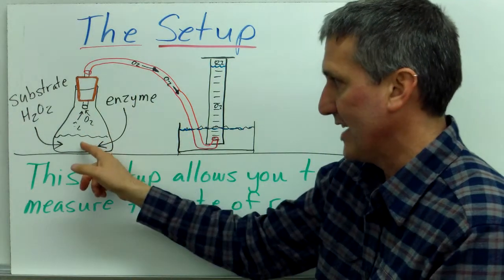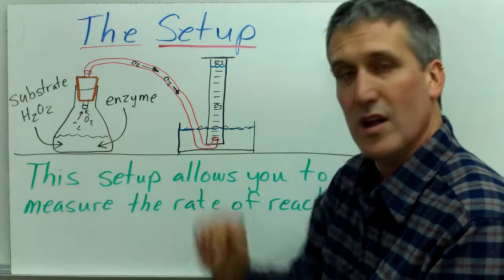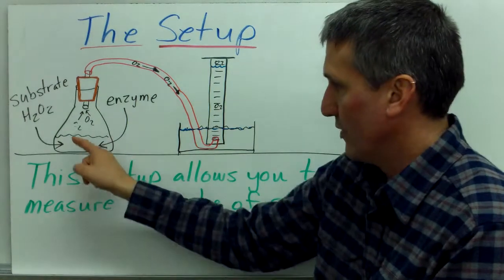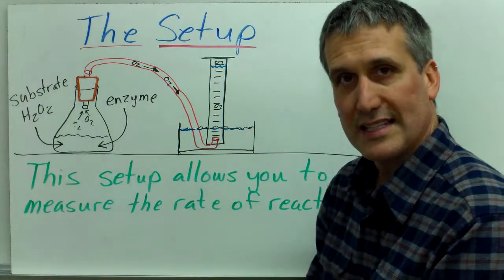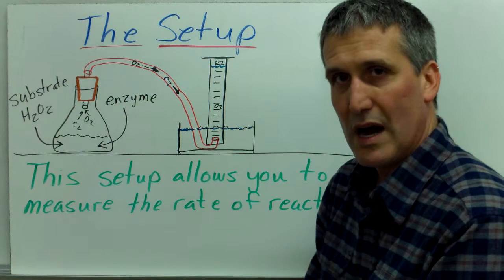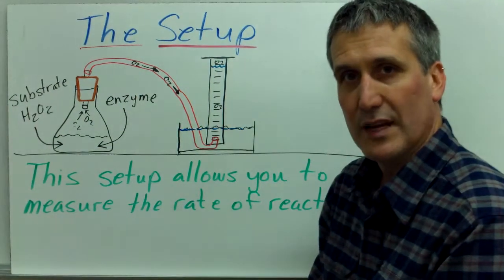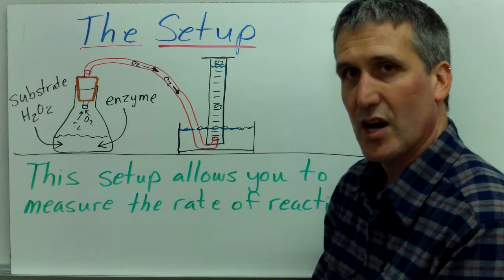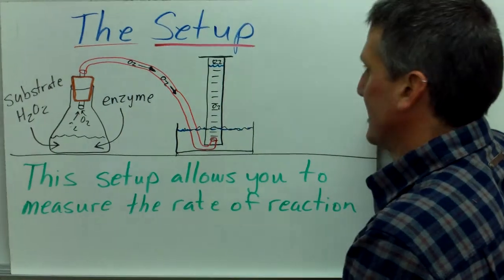This setup allows you to measure the rate of reaction, because you can measure how quickly the oxygen gas is accumulating in the graduated cylinder. That will tell you how fast the reaction rate. The faster the reaction rate, the quicker the hydrogen peroxide is being broken into oxygen gas, and that will give us a very clear indication of the reaction rate.